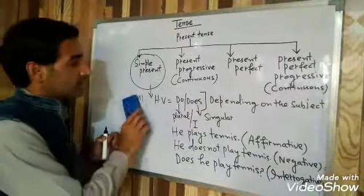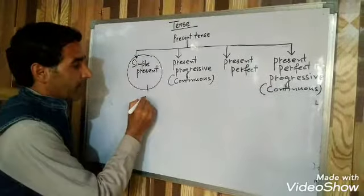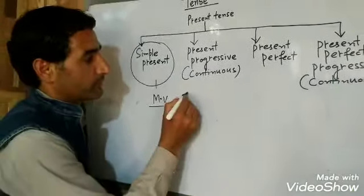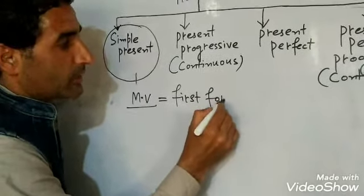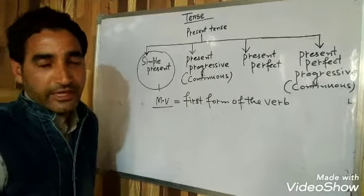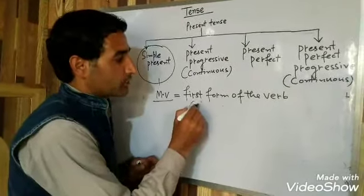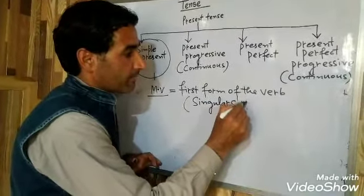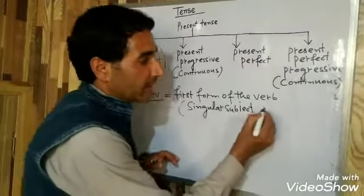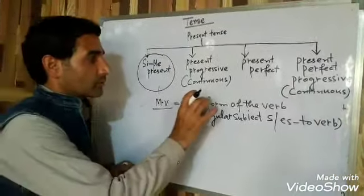Now let us see how the main verb is used in simple present. We use the first form of the verb. And when the subject is singular, we have to add 's' or 'es' to the verb, because there must be subject-verb agreement.